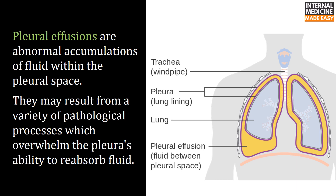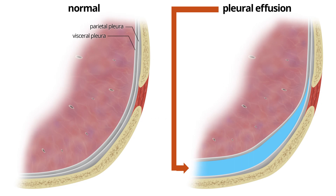Pleural effusions are abnormal accumulations of fluid within the pleural space. They may result from a variety of pathological processes which overwhelm the pleura's ability to reabsorb fluid. Here you can see the accumulation of fluid between the parietal pleura and the visceral pleura.